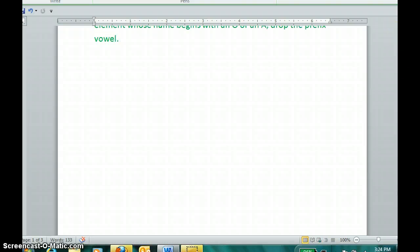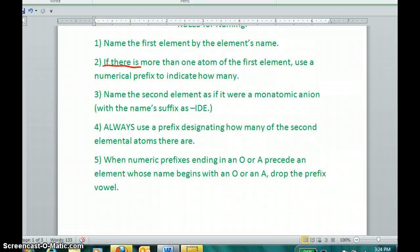We can practice some more here. If I were to see this, CO. Well, I name the first element by its name. That's carbon. If there's more than one, I'd use a prefix. But there's only one carbon in this compound. So, rule three is name the second element as if it were a monatomic anion, ending in IDE. So oxygen would be called oxide. And then we always use a prefix designating how many of the second, even if there's only one. And the prefix for one of something is mono. However, let's not forget. If the prefix ends in O or A, which mono does, and it precedes a name beginning with O or A, which it will, we drop the O or the A from the prefix. So I wouldn't call this carbon monooxide, because that sounds like you've got a problem. Instead, we call it carbon monoxide.